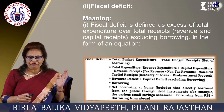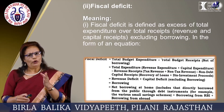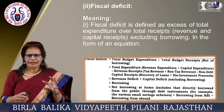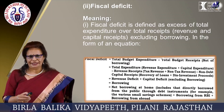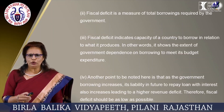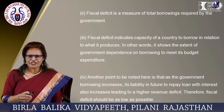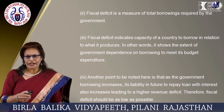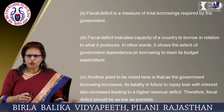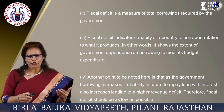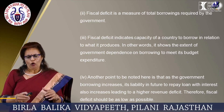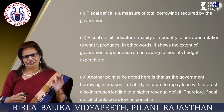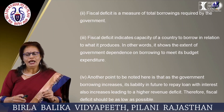Fiscal deficit is defined as an excess of total expenditure over total receipts, including both revenue and capital receipts excluding borrowings, as shown in the equation in the slide. Fiscal deficit is a measure of total borrowings required by the government. It indicates the capacity of a country to borrow in relation to what it produces. In other words, it shows the extent of government dependence on borrowings to meet budget expenditure. Government borrowing increases its liability to repay loans with interest in the future, leading to higher revenue deficit. Therefore, fiscal deficit should be kept as low as possible.